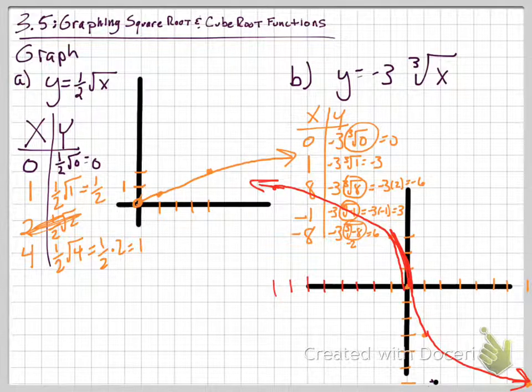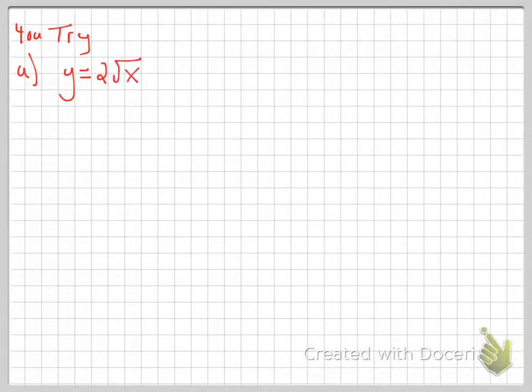What I'd like you to try now is the following. See if you can graph for part A, let's keep it simple, Y equals 2 square root of X. Make a table of values, plot some points. And then for B, let's just graph Y equals the cubed root of X. Give it a shot and we'll see you guys tomorrow.